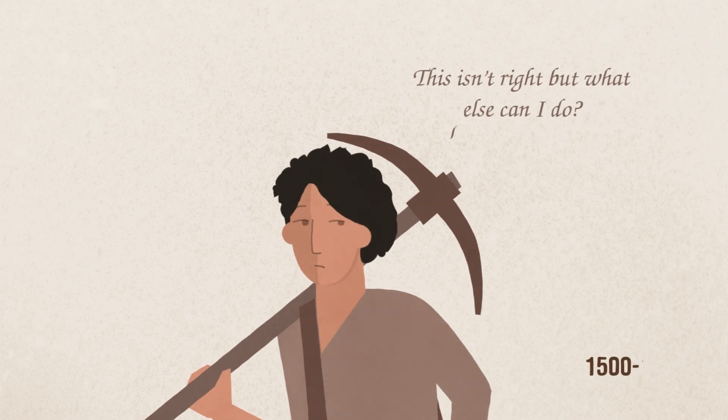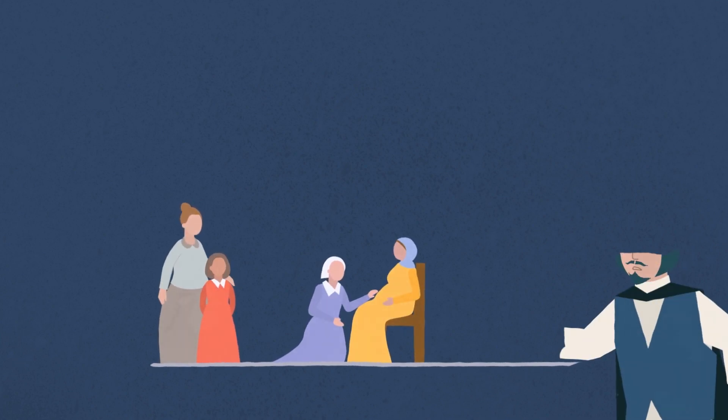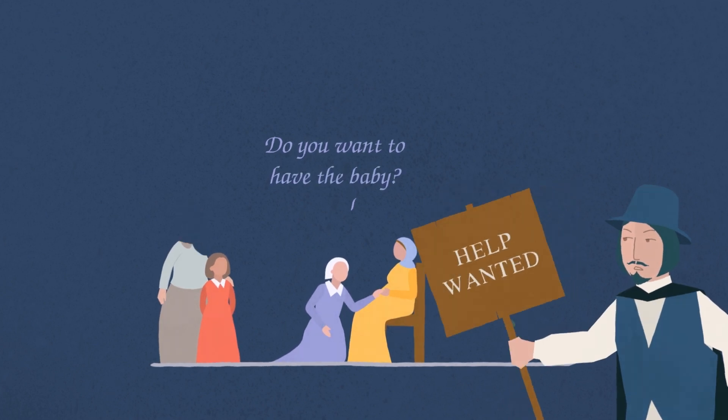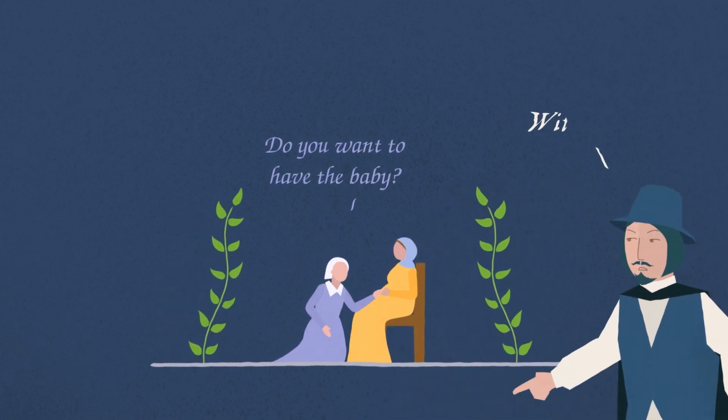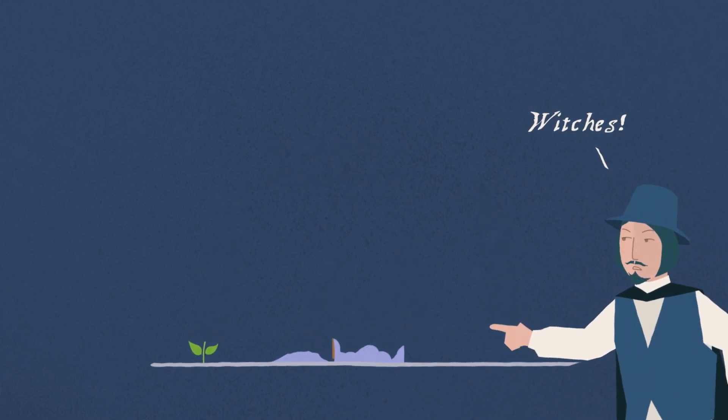Before jobs were normal, women around the world practiced various forms of herbal birth control and infanticide without controversy. To make sure women produced children who would become workers, they outlawed birth control and accused all midwives and women who continued practicing it of witchcraft and burned them alive.